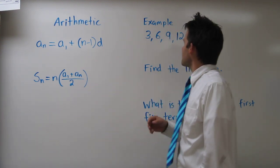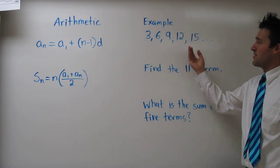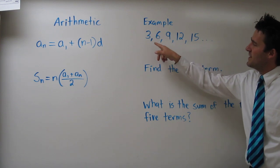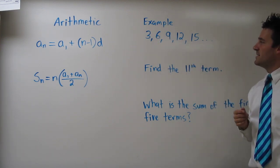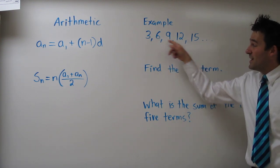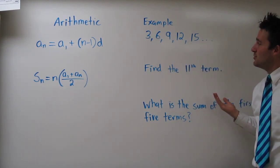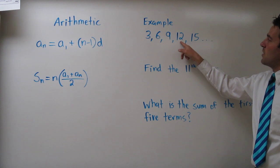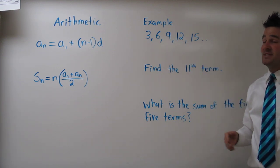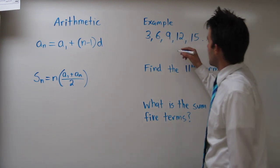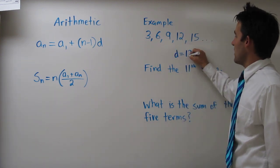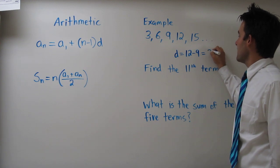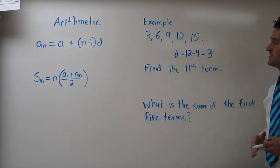Let's look at an example. Right here we have an arithmetic sequence: 3, 6, 9, 12, 15. Now by looking at this and subtracting any two terms, for example 12 minus 9, we see that the common difference is 3. So d equals 12 minus 9, which is 3.